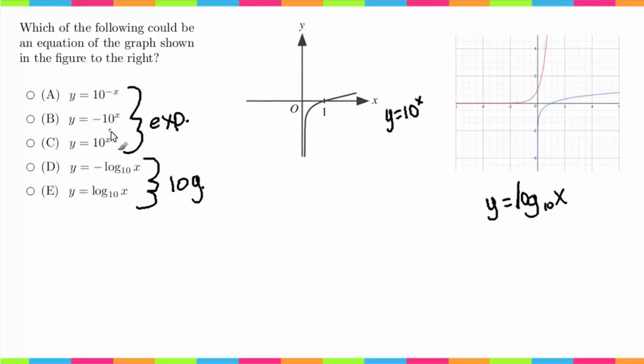So for example, let's just take the first one. If we plug in 1, we get 10 to the negative 1, which equals 1 over 10 and does not equal 0. Same thing here: 10 to the 1 would give us negative 10, not 0. And 10 to the 1 is 10, not 0.